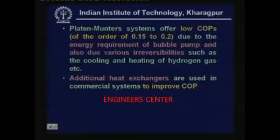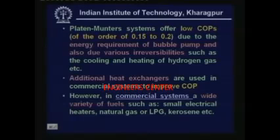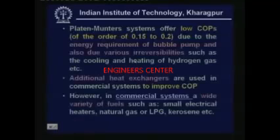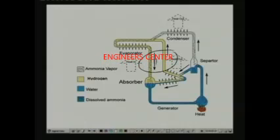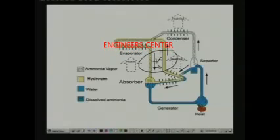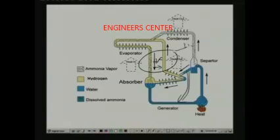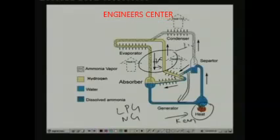Additional heat exchangers are used in commercial systems to improve COP. For example, cold vapor going to the absorber can exchange heat with hot hydrogen gas going to the evaporator, and another heat exchanger can preheat the solution going to the generator. A wide variety of fuels can be used as the heat source: electrical heaters in small systems, natural gas, LPG, kerosene, hot water, or hot oil.